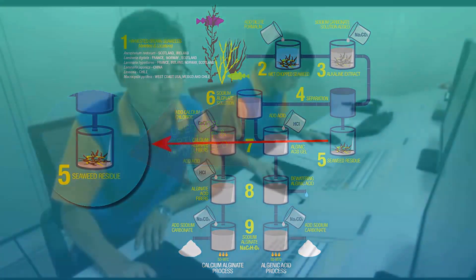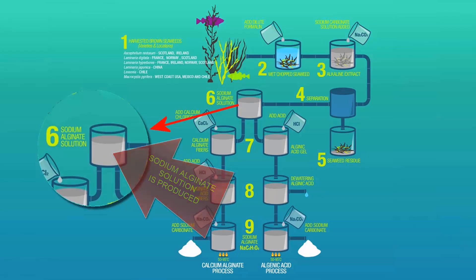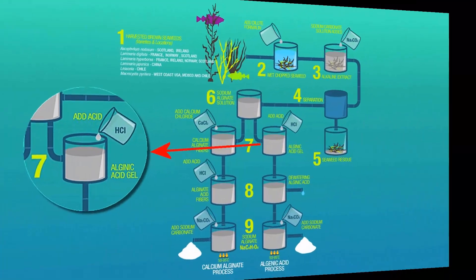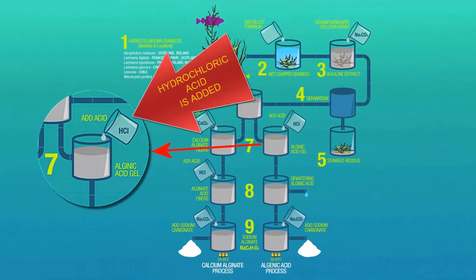In the sixth processing step, sodium alginate is produced. In the alginic acid process, hydrochloric acid is added to the sodium alginate, creating a gel-like substance.